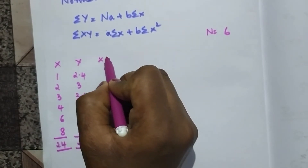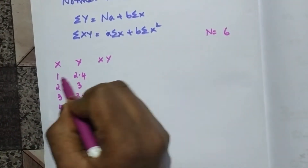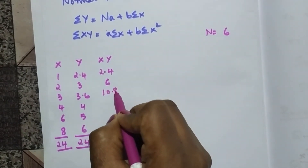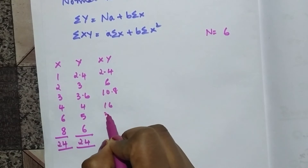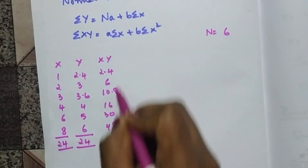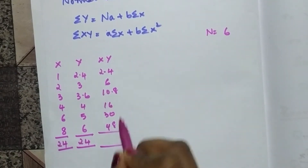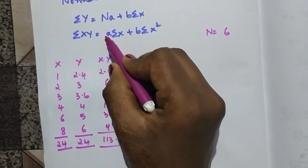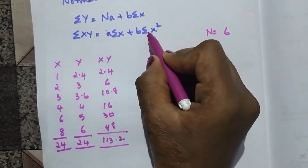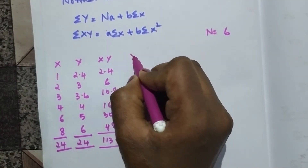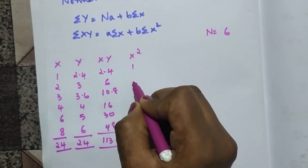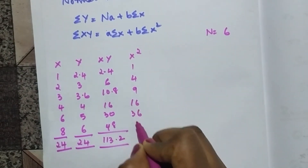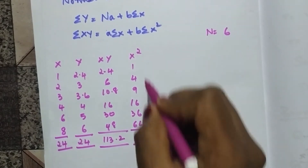Now let's find summation xy. We multiply the x and y values: I get 2.4, 2.4, 6, 10.8, 16, 30, and 48. After totaling these I get summation xy = 113.2. Next we need summation x², so let's square the x values. After squaring and adding all of them I get summation x² = 130.